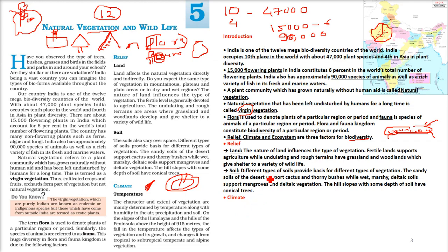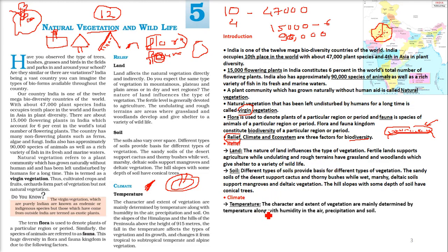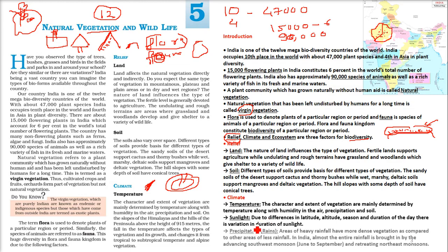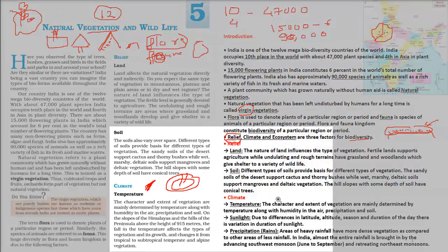Coming to the second factor — climate. Temperature, sunlight, and precipitation all affect biodiversity. If you go to a place where the temperature is quite extreme, the vegetation will be very different.